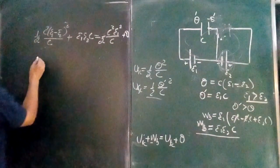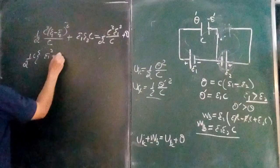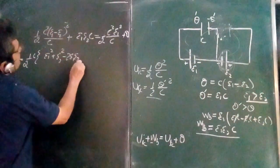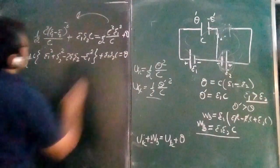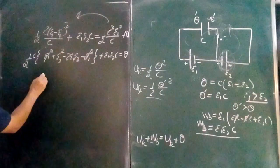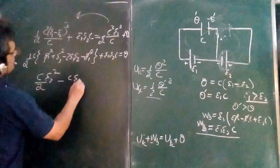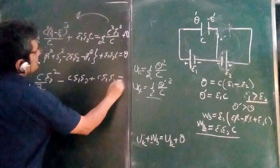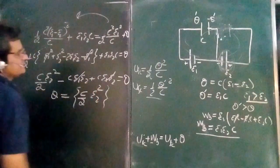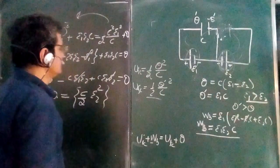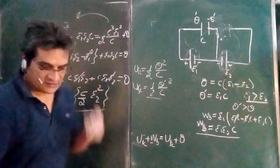Solving this equation: bring terms to one side. C/2·(E1² + E2² − 2·E1·E2) + E1·E2·C = C·E1²/2 + Heat. Expanding: C·E1²/2 + C·E2²/2 − C·E1·E2 + C·E1·E2 = C·E1²/2 + Heat. The C·E1² terms cancel, and the E1·E2 terms cancel, giving Heat = C·E2²/2. Interestingly, the heat generated is independent of E1 — battery E1 doesn't count at all in the heat equation. This is the interesting result obtained by following the proper and complete method.